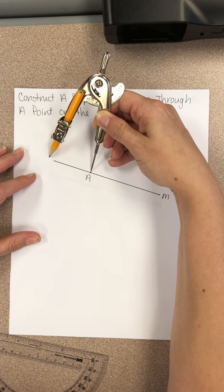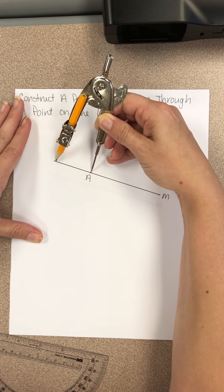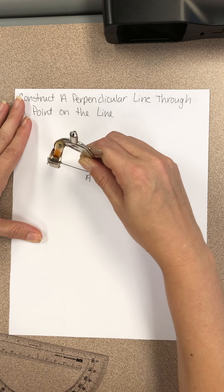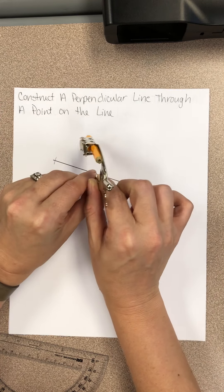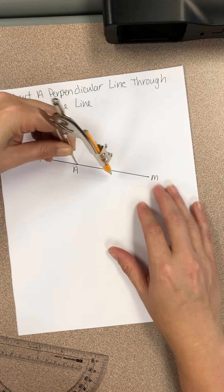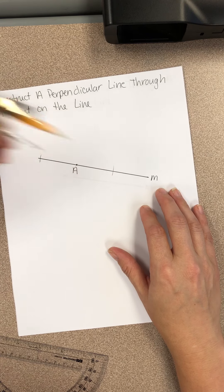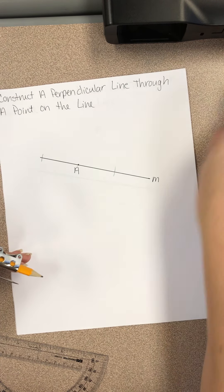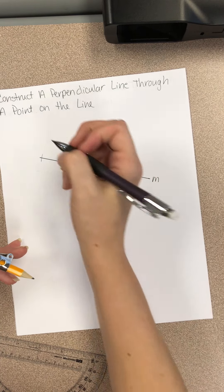Right now, my compass is too big. I need to adjust it so that it'll actually touch line M. And then I'm going to make an arc on this side and an arc over on this side. Like that. And we're going to label these points C and D.